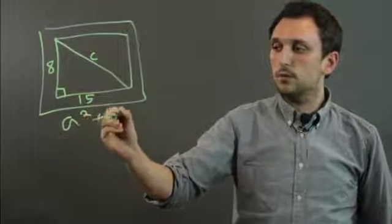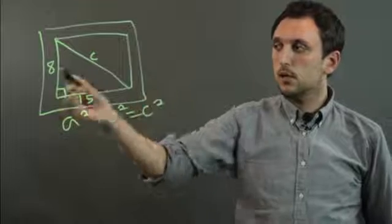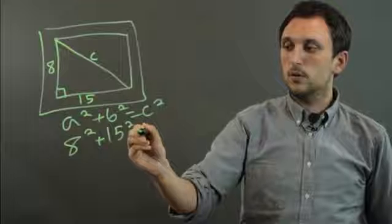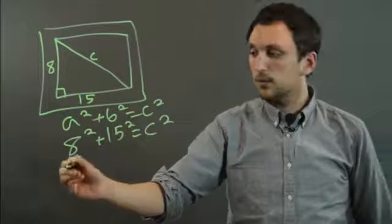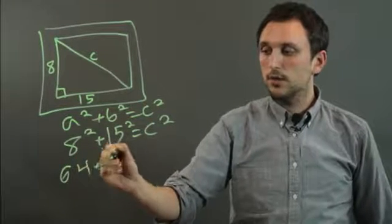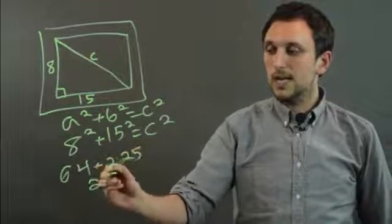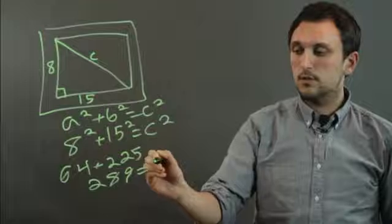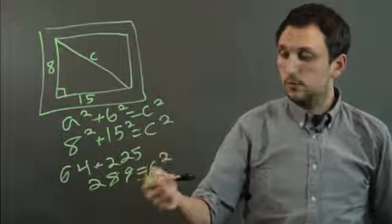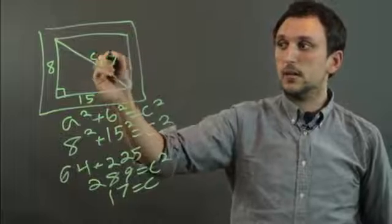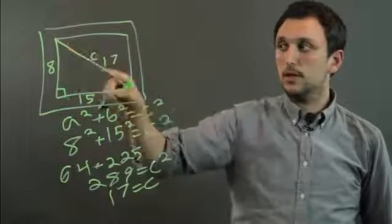And we know that A squared plus B squared equals C squared. So 8 squared plus 15 squared equals C squared. Now 8 squared is 64, and 15 squared is 225. So that's going to equal 289, which is C squared. And you take the square root of both sides, and you get 17 equals C. So the diagonal length of your TV screen is 17 inches.